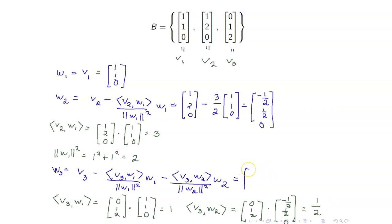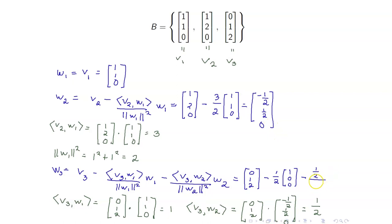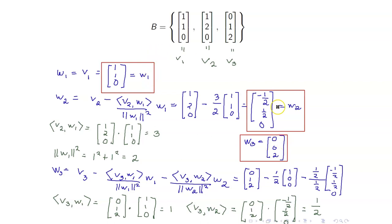Now let us substitute. V3 is (0, 1, 2) minus V3·W1 = 1 over norm of W1 squared = 2, times W1, minus V3·W2 = 1/2 over norm of W2 squared, which is also 1/2, times W2 = (-1/2, 1/2, 0). Upon performing this operation, W3 turns out to be (0, 0, 2). So here are our W1, W2, and W3, and these three vectors form an orthogonal basis.